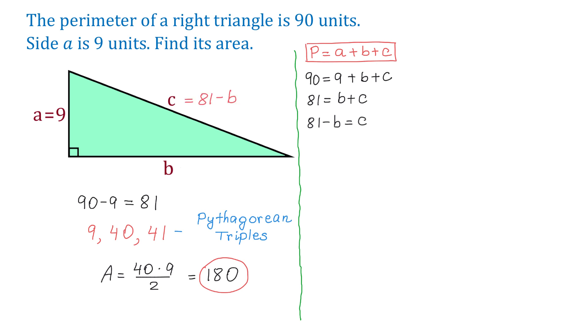So what we have now is that one side is 9, the other side is B, and the hypotenuse is 81 minus B. Now in the next step, we will use the Pythagorean theorem, and this is A squared plus B squared equals C squared. Then we will replace A with 9, so on the left side we will have 9 squared plus B squared.